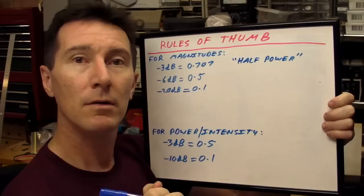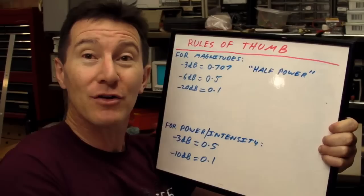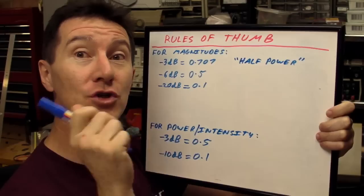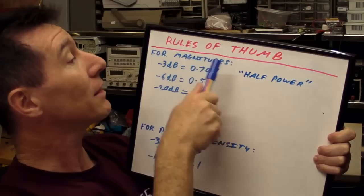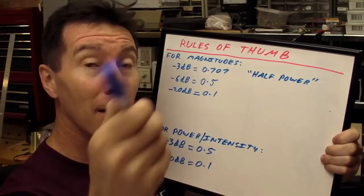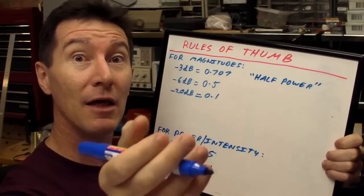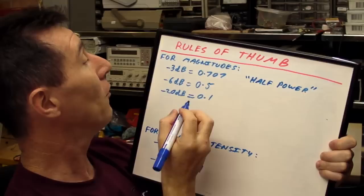Okay, let's look at some rules of thumb, some ways you can work with dBs without using your silly calculator. These are numbers, ratios, which you should remember, which will make working with dBs real easy for you. Now, if you're talking in terms of magnitudes, which is probably most, dare I say, most of the time in electronics, when you're dealing with voltages and signal levels, and things like that, you'll be dealing with magnitudes. So, you'll be using the 20 log formula. Remember that.